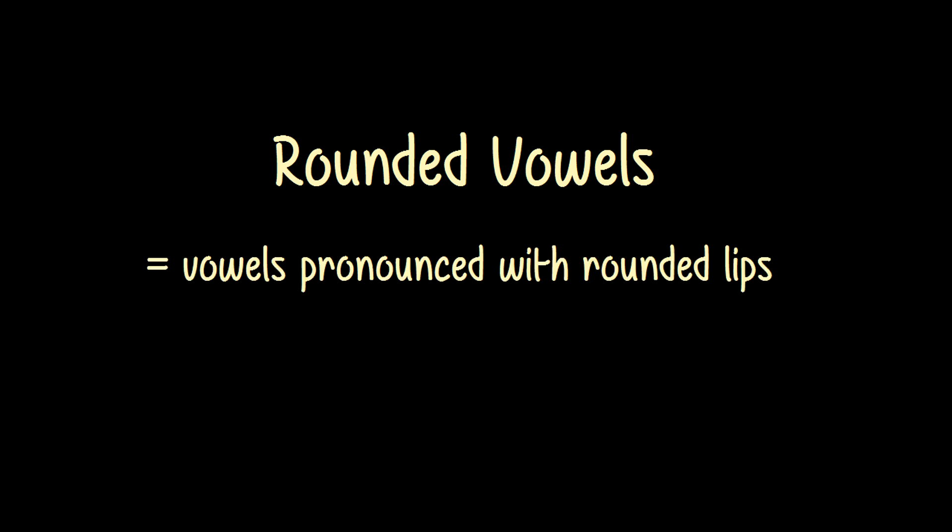Next, I want to talk to you about rounded vowels. A rounded vowel is, like the name suggests, a vowel pronounced with rounded lips. This is nothing new to anyone speaking a human language, because rounded vowels are everywhere. In English, vowel sounds like the O in 'boat' or the U in 'cool' are rounded. Generally speaking, vowels pronounced in the back of the mouth are often rounded, like in English. In Swedish, there are also front rounded vowels, like in French and German, but we'll get to those later.